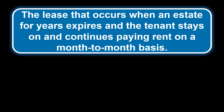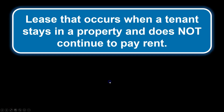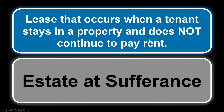The lease that occurs when an estate for years expires and the tenant stays on and continues paying rent on a month-to-month basis — so an estate for years is converted into a periodic tenancy — is called an estate at will. They are willingly deciding to stay and the tenant will continue to pay rent. The lease that occurs when a tenant stays in a property and does not continue to pay rent — the landlord suffers because the tenant isn't paying and they'd have to start eviction proceedings — is called estate at sufferance, because the landlord is suffering.